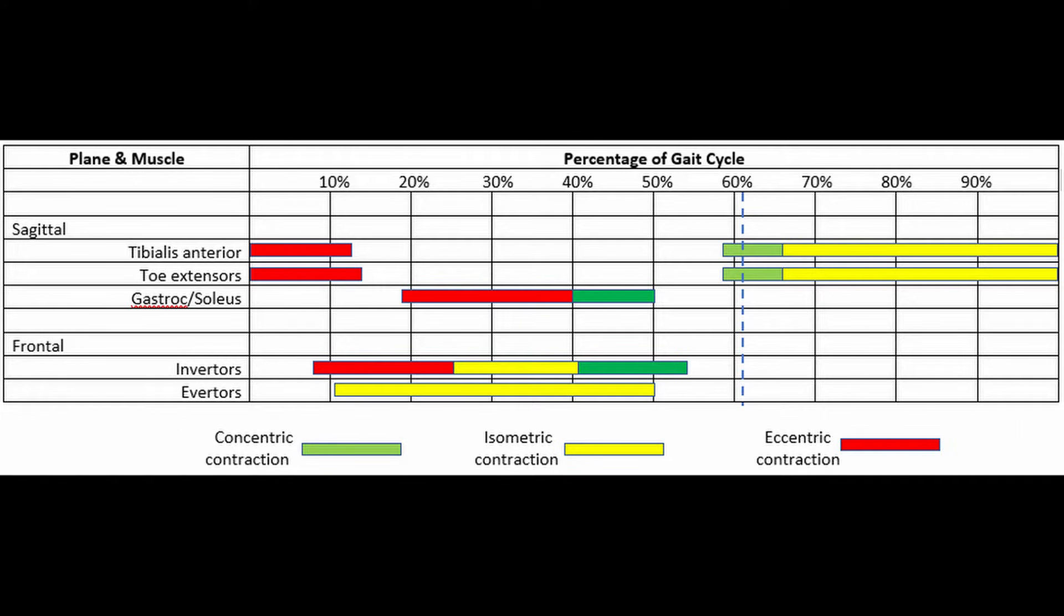Most of the activity in the frontal plane is by our ankle inverters. These muscles eccentrically contract to lower the foot to the ground during loading, stabilize through mid-stance, and then concentrically contract to pull the foot back into a supinated position prior to the swing phase.